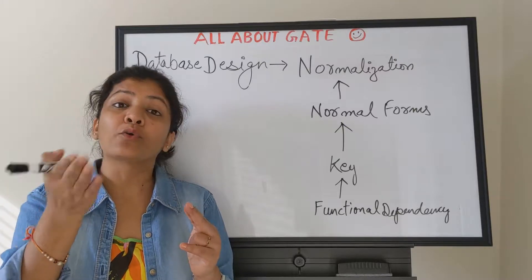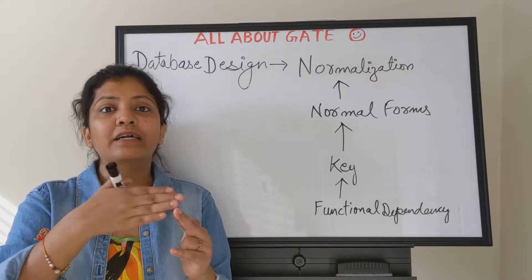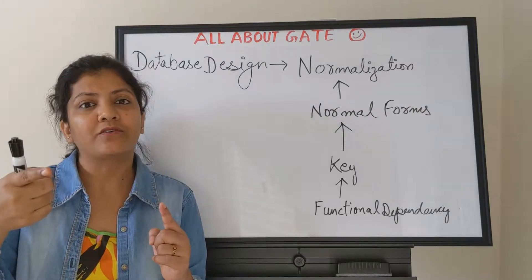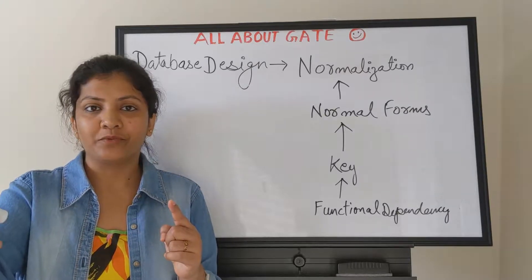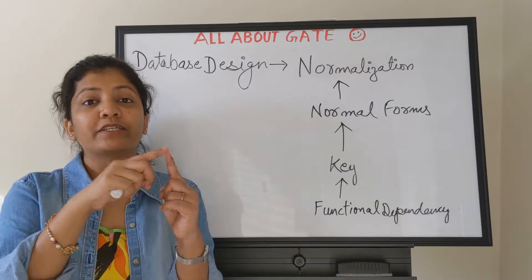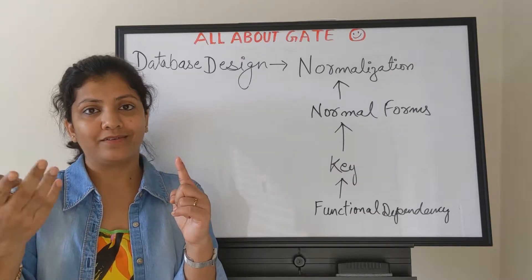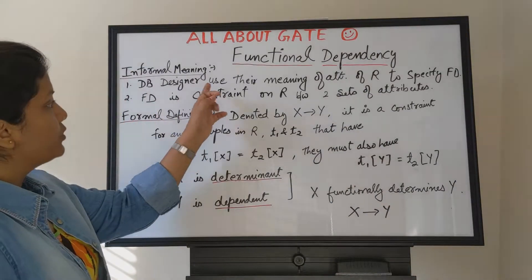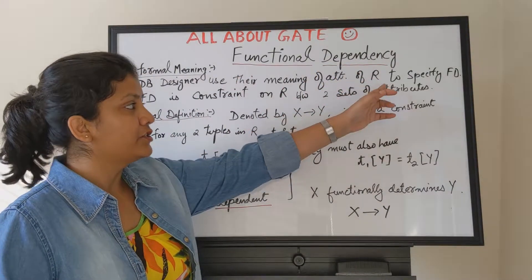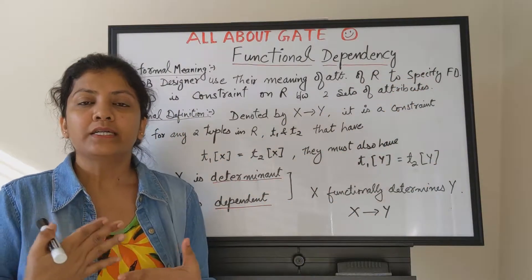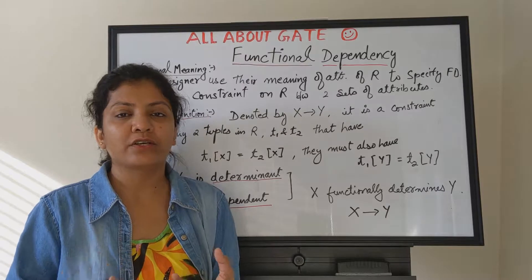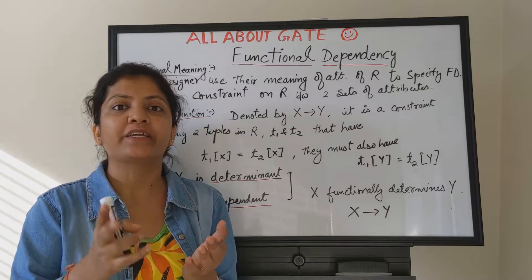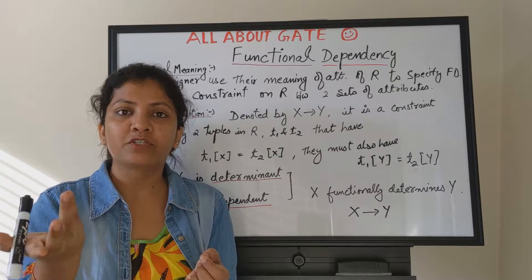Student name is dependent on student roll number. We can say that one attribute or set of attributes determines the value of another attribute. Student roll number, if given, determines what the name of the student should be. The database designer uses the meaning of each attribute in the relation to specify functional dependencies, because they know the relationship between attributes — which one determines which.